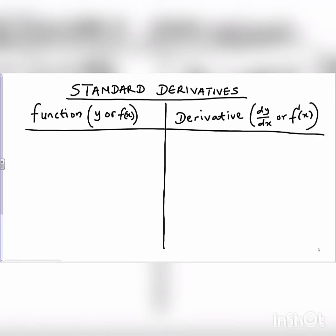According to our general rule of definition, if we have y is equal to ax raised to the power n, then the derivative will be anx raised to the power n minus 1. That is, if we differentiate ax raised to the power n, it will give us anx raised to the power n minus 1.